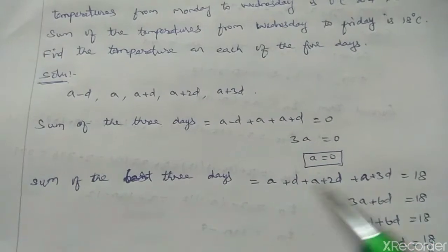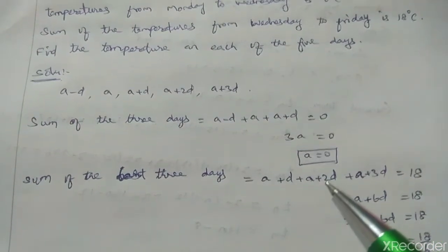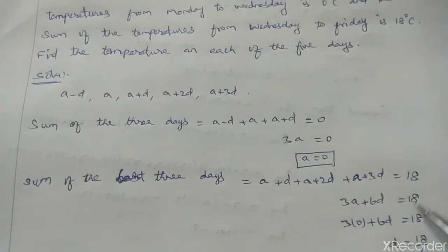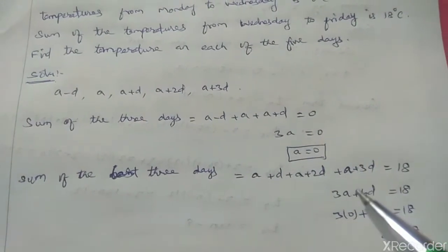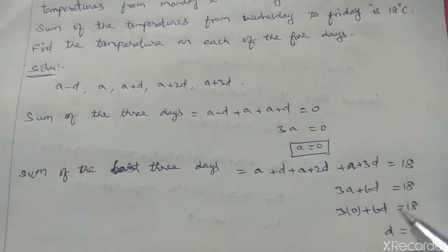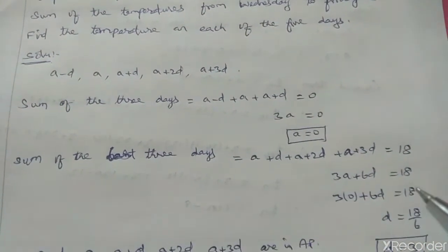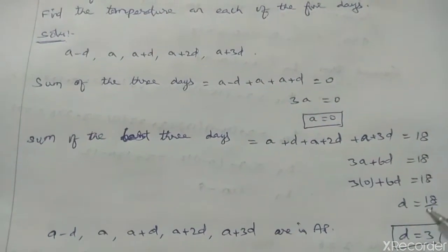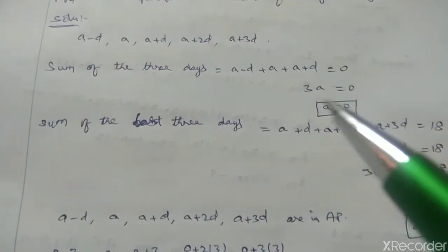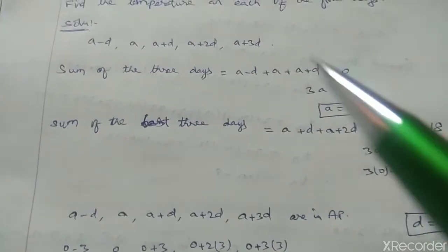Three times a is 3A plus D plus 2D plus 3D is 6D equal to 18. Substitute a value: 0 plus 6D equal to 18. D equal to 18 by 6. Therefore, D equal to 3.